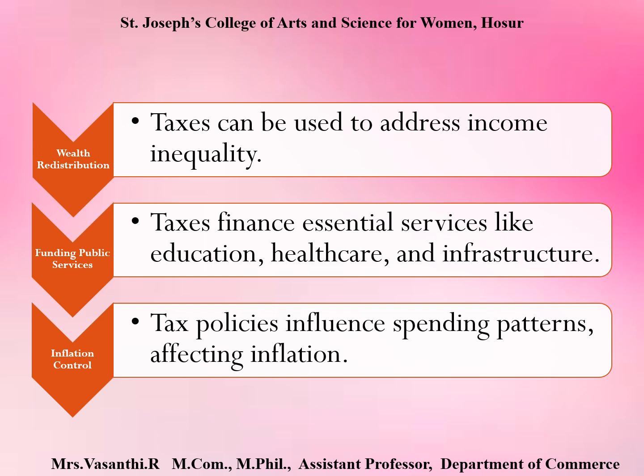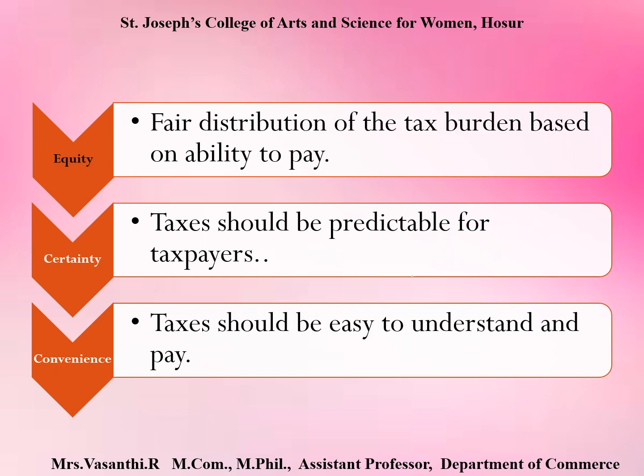The sixth objective is inflation control — tax policies influence spending patterns and affect inflation. The seventh is equity — meaning fair distribution of the tax burden based on ability to pay. If you earn a higher income, you pay a higher tax; if you earn a lower income, you pay a lower tax.